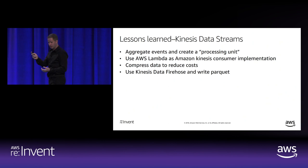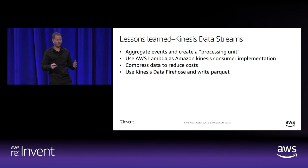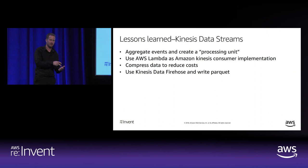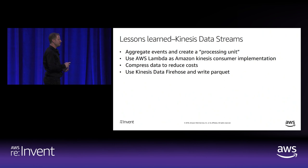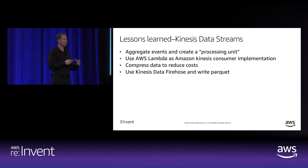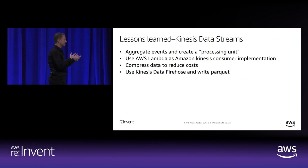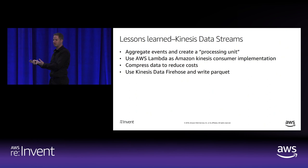Plan ahead before deploying to production — know how you're going to release, deploy, and monitor your functions. As you add more and more functions, you must know the exact version of each, have good monitoring, and ensure it's healthy from the beginning. For Kinesis Data Streams: aggregate data before writing to Kinesis to create processing units, simplify the flow, and enable stateless Lambda consumers. Compress data before writing to Kinesis — this reduces the number of shards and gives significant cost reduction. Use Kinesis Firehose with Parquet for simple, cost-effective storage.